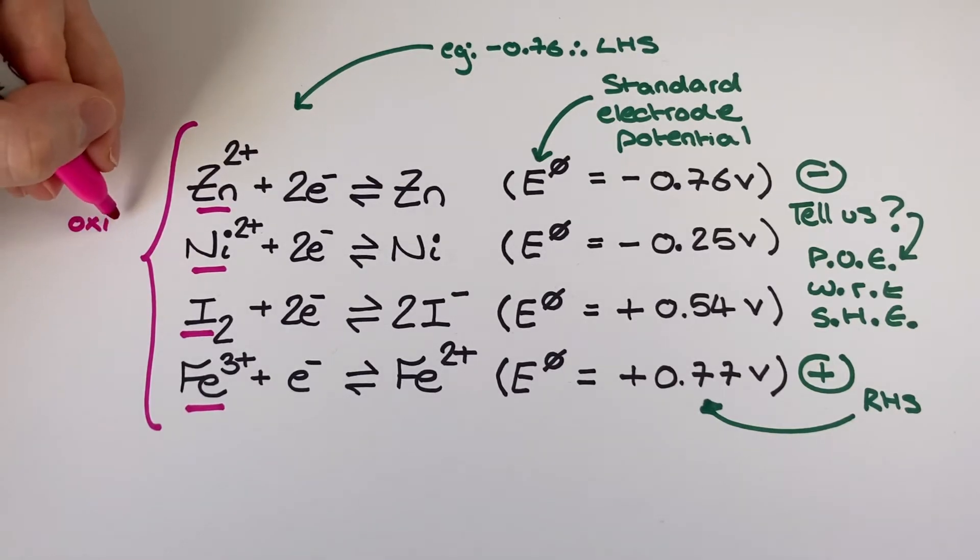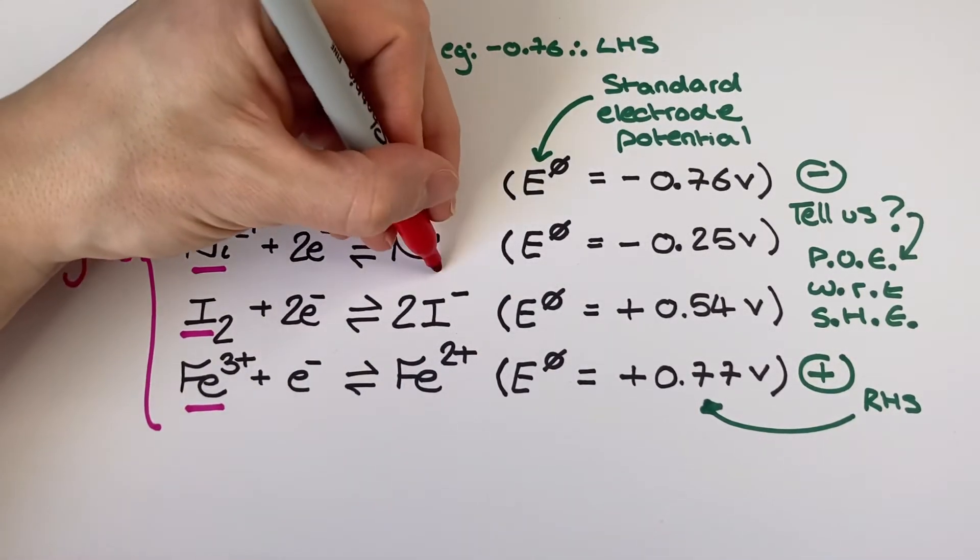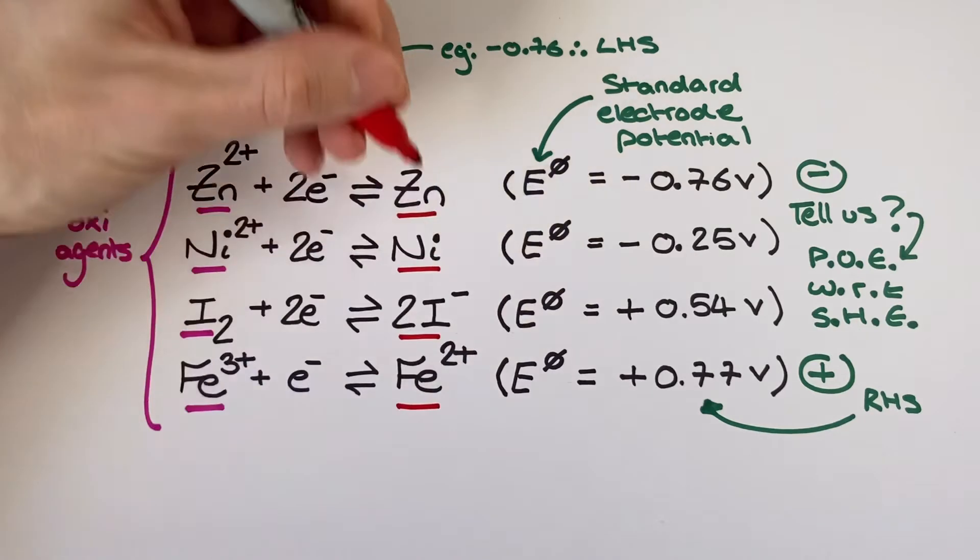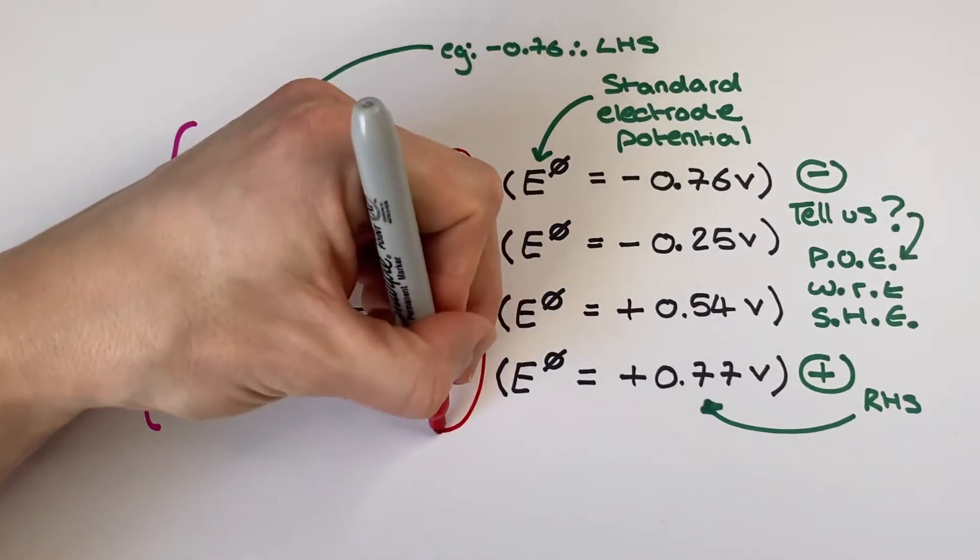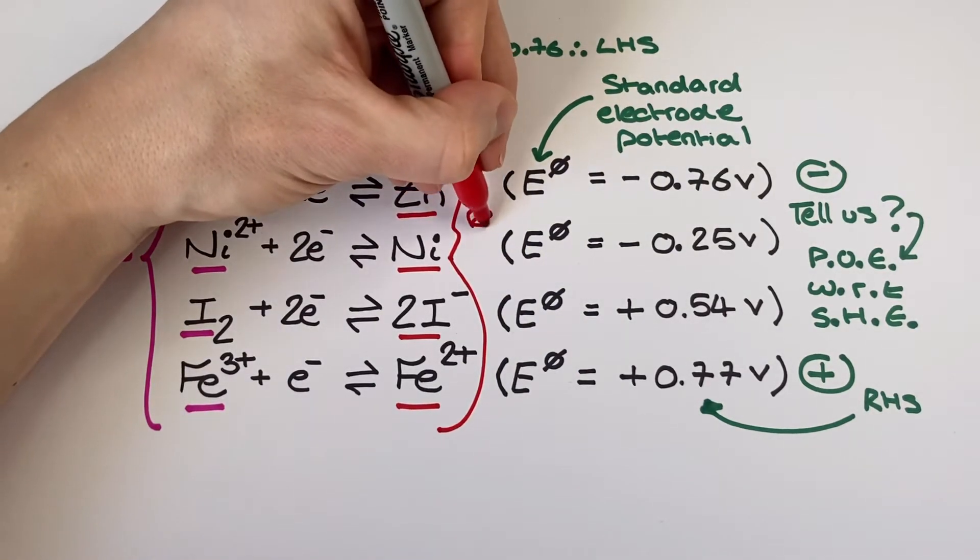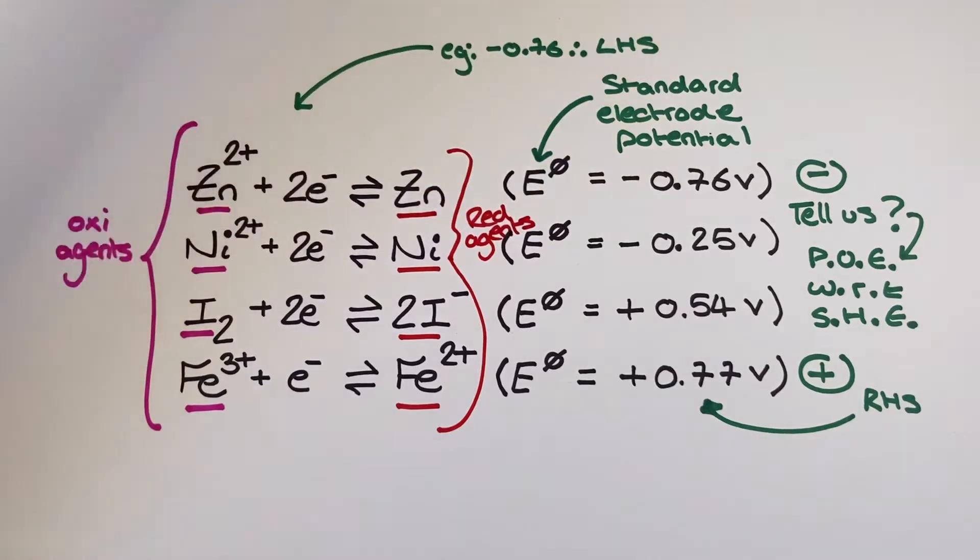The conventional way of writing all of these half equations is in the reduction direction but with equilibrium arrows, which means everything on the left can be seen accepting electrons which means they are all demonstrating their ability to be oxidising agents because an oxidising agent is an electron acceptor. Everything on the right hand side is demonstrating its ability to donate electrons which means everything on the right hand side is an example of a reducing agent because a reducing agent is an electron donor.